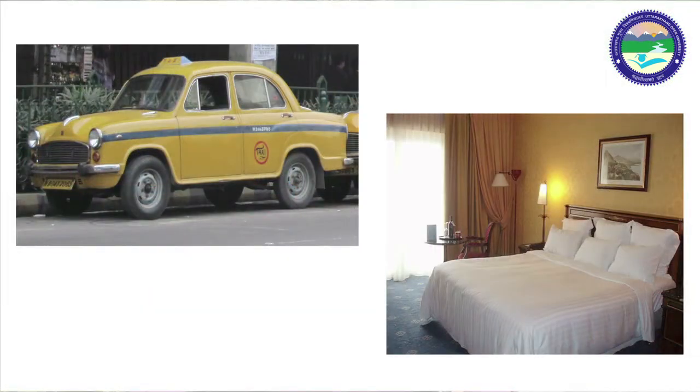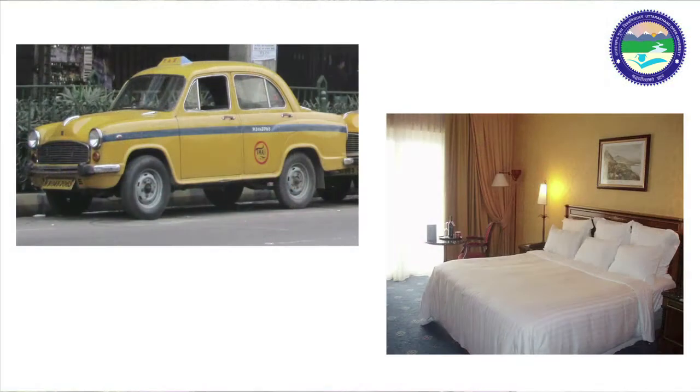The next feature is absence of ownership. When we purchase a tangible product, we become the owner of that product — for example, if I purchase a mobile phone, I become its owner. But when we purchase a tourism product, we cannot claim ownership. For example, when we hire a taxi, we can only take its services from the departure destination to the arrival destination; after reaching, we have to leave the taxi. Similarly, if we hire a hotel room, when checkout time comes, we have to leave the room. We cannot claim ownership of the taxi, hotel room, or the hotel property.